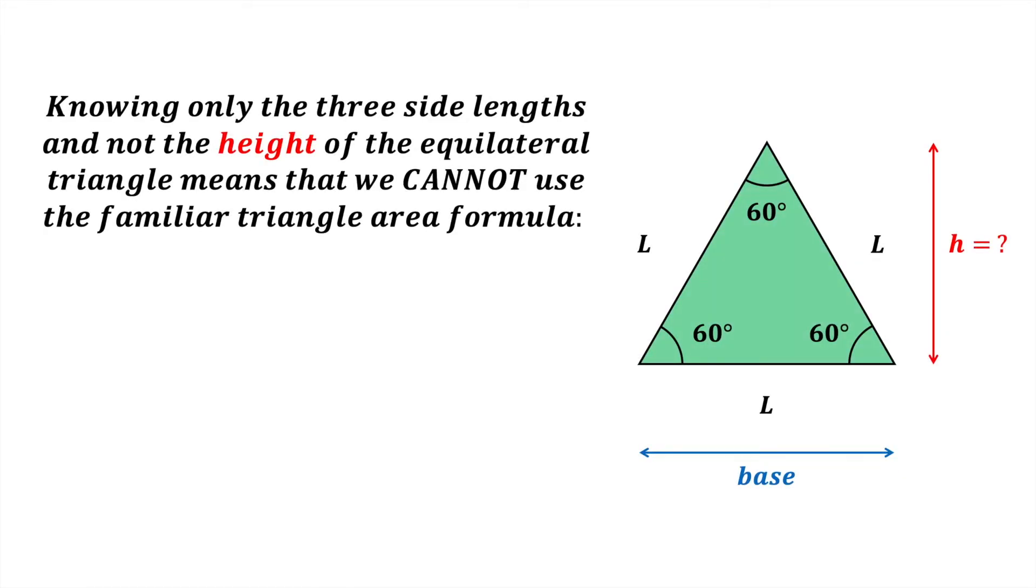Knowing only the three side lengths and not the height of an equilateral triangle means that we cannot use the familiar triangle area formula: Area equals half times base times height, or A equals half bh. So what do we do?